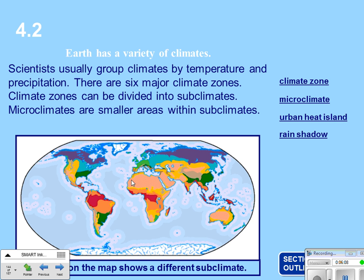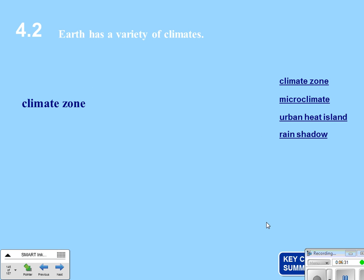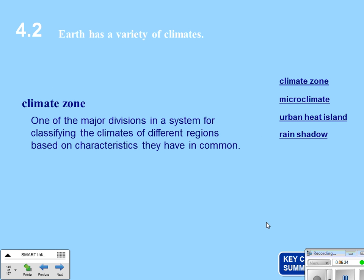All the different colors on the climate map represent a different climate. You can see how they're affected by latitude — the equator runs right through where all the red is, and as you move up away from the equator, that changes the weather as well as the climate. A climate zone is a major division in a system for classifying climates of different regions based on shared characteristics — for example, an area that's always hot and dry, or always wet and cold.